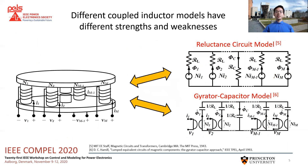In this work, we will consider parallel coupled structures as pictured here on the left. This type of structure has several parallel rods connected together by a top and bottom plate with negligible reluctance. Some of the rods have windings around them — four are pictured in this example — and there can also be a shared rod with no winding that serves as a shared common flux return path. This magnetic circuit can be represented using a traditional reluctance model or a capacitor gyrator model.